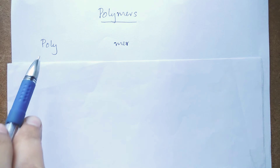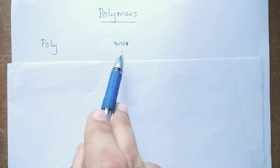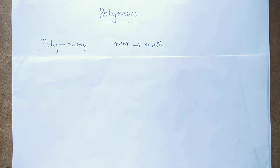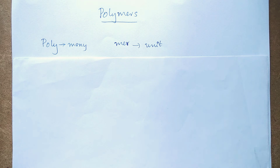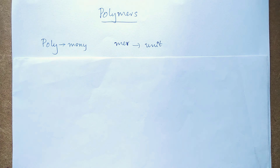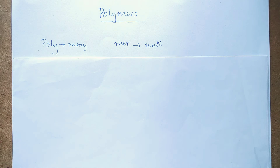Today onwards in a couple of videos I am going to explain about the chemistry of polymers. First, let's see the definition of the term polymer. The term polymer can be divided into two parts: the first is 'poly' and the second is 'mer'. Here, poly means many and mer means unit. Therefore, a polymer is a substance which is formed by the combination of many repeating units.